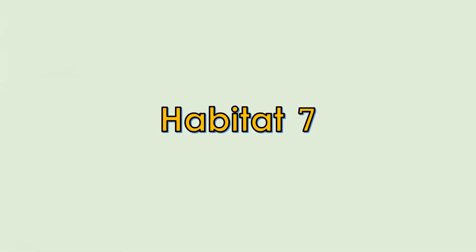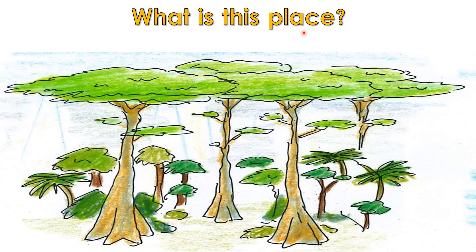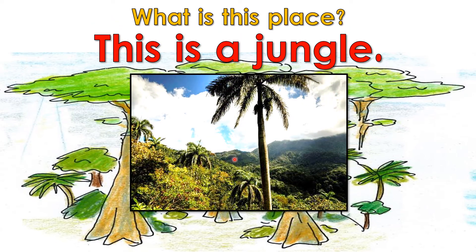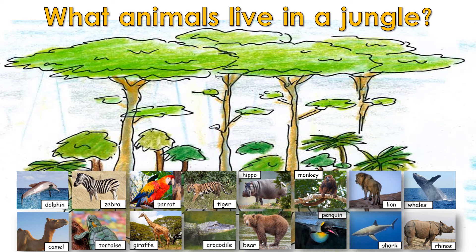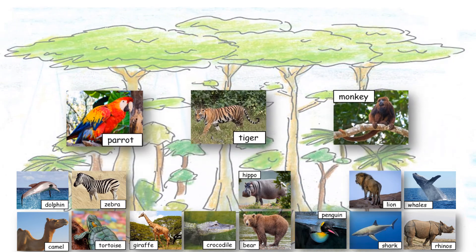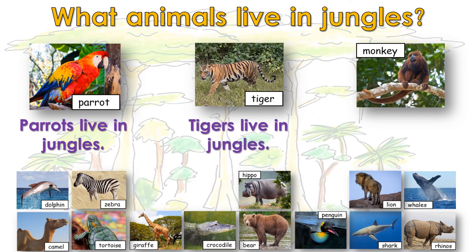Habitat 7. What is this place? This is a jungle. What animals live in the jungle? Parrots live in jungles. Tigers live in jungles. Monkeys live in jungles.